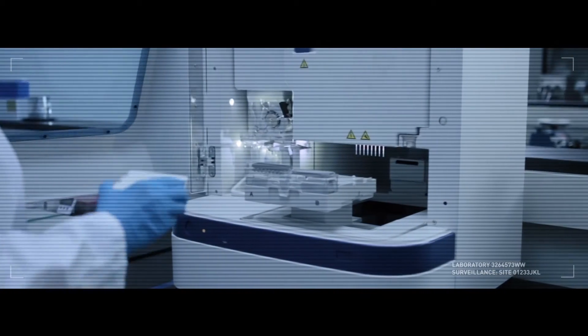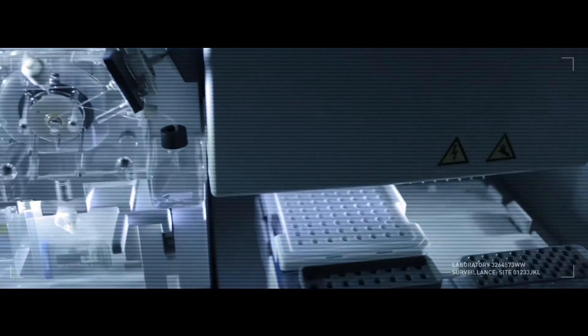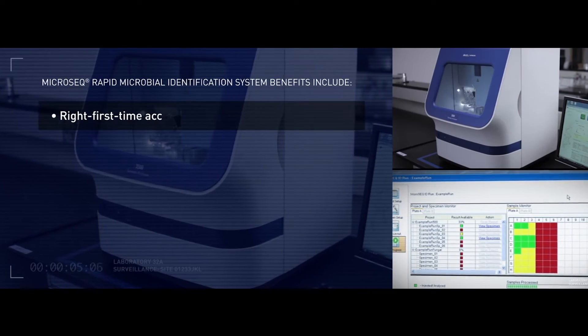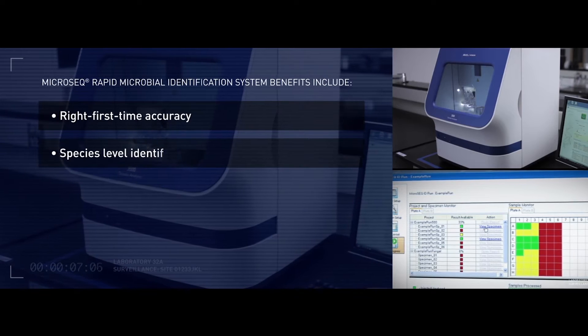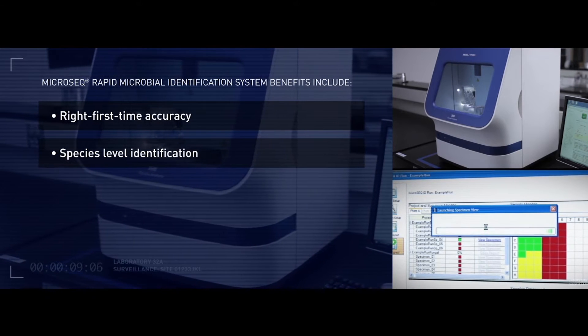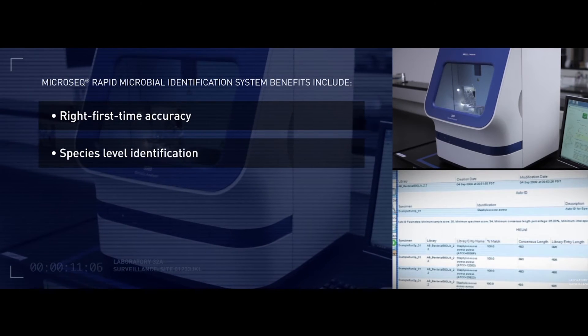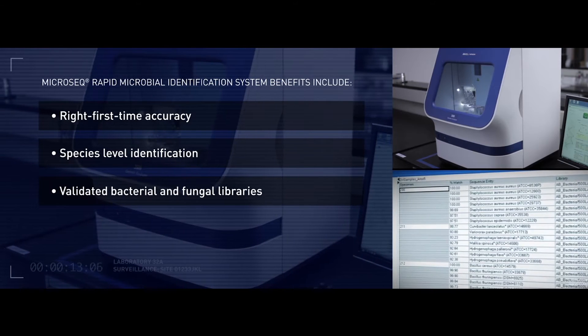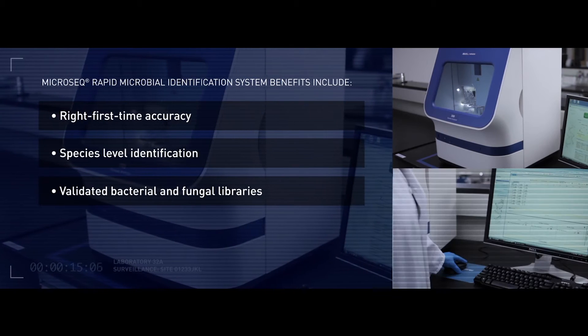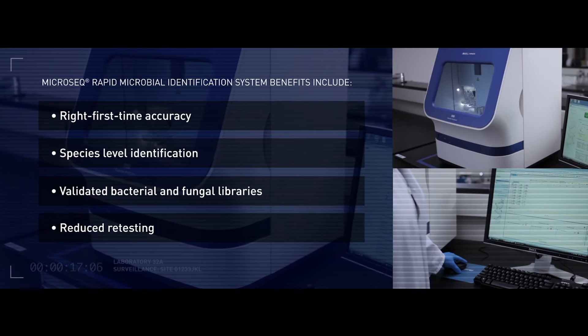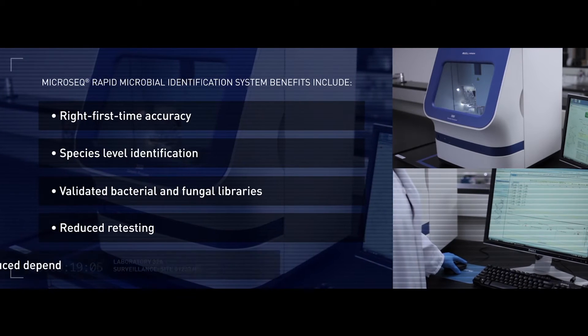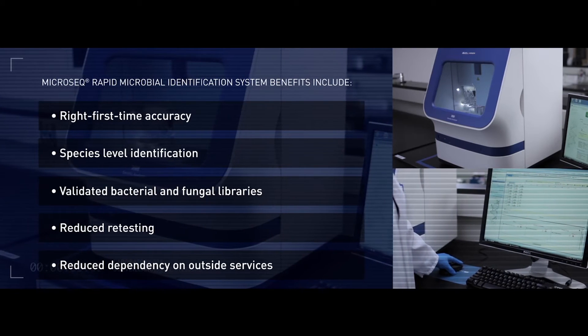Based on proven DNA sequencing technologies, benefits include: minimize failed IDs with right-the-first-time accuracy to the species level; less confusion with ambiguous results with comprehensive validated libraries for bacteria and fungi; and significant return on investment due to reduced retesting and reduced dependency on outside services.